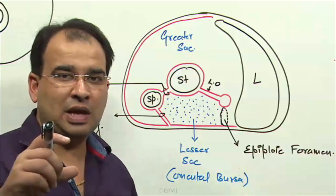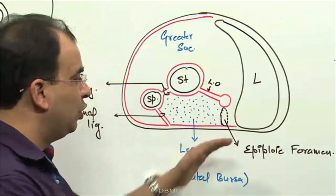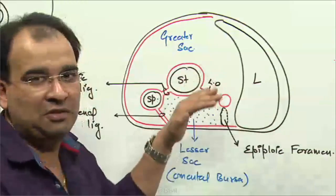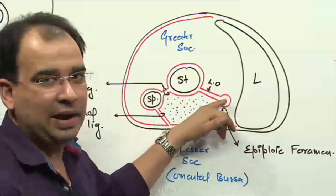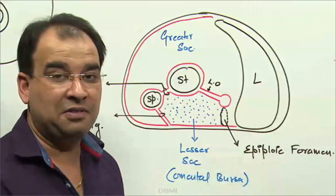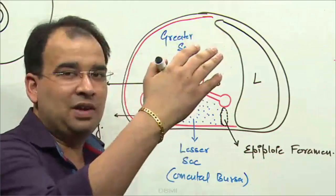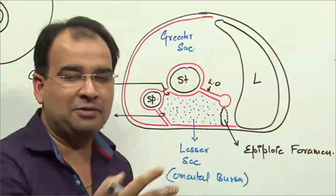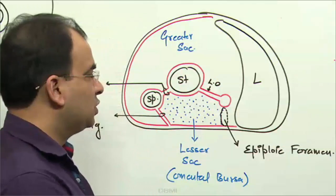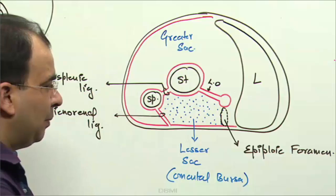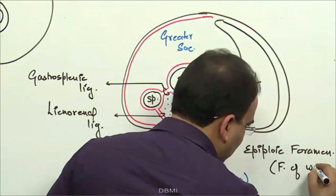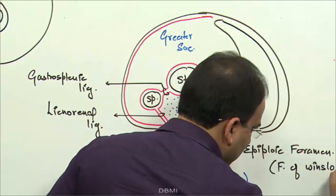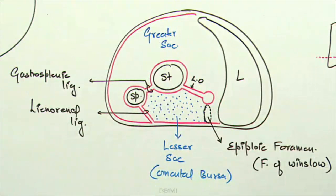The relations of the epiploic foramen are extremely important and frequently asked in exams. Anteriorly the relation is the portal triad; posteriorly it is the inferior vena cava; superiorly we have the caudate lobe of the liver; and inferiorly we have the first part of the duodenum. This foramen is also called the foramen of Winslow.